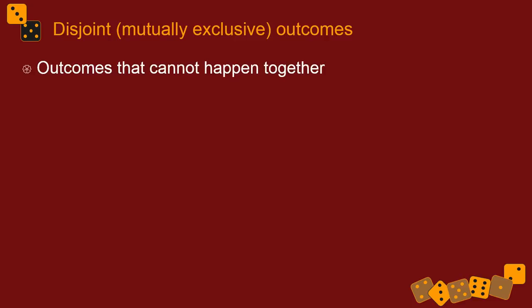Let's focus on those outcomes. Outcomes that cannot happen together, that just logically or physically or by definition cannot happen together, we call those disjoint. They're disjoint from each other. This only applies to groups of outcomes, not to an individual outcome. Disjointness doesn't make sense unless we're talking about the relationship between two or more outcomes.